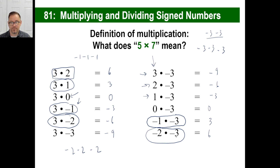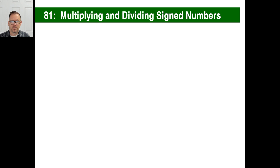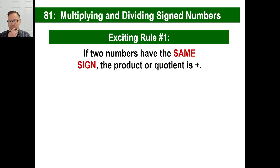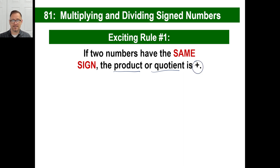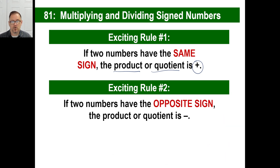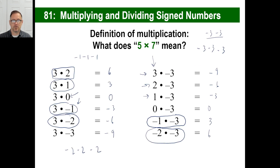So you can see a pattern, and we have to be logical about it. Here are the actual rules. Rule one: if you have two numbers with the same sign — both negatives or both positives — the product (the answer to a multiplication problem) or the quotient (the answer to a division problem) is positive. Rule two: if the two numbers have opposite signs, whether you're multiplying or dividing, the answer is negative.